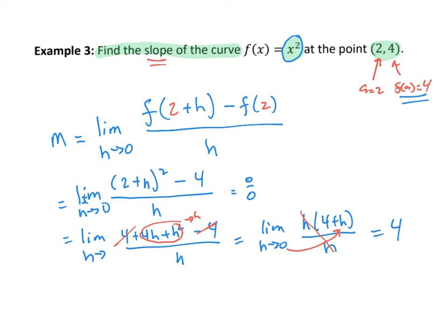That's called the instantaneous rate of change — we figured out the rate of change of the curve at a single point. This is not the average rate of change; this is the slope of the curve at the point. You use the limit formula f of a plus h minus f of a over h as h goes to 0 to compute slopes of curves. It's the limit of the difference quotient as h goes to 0.